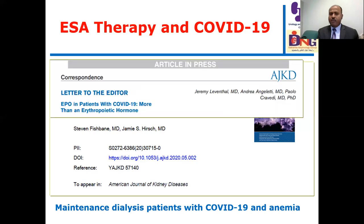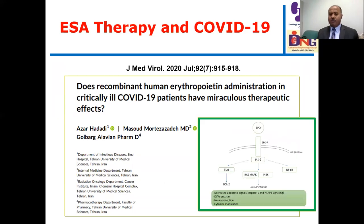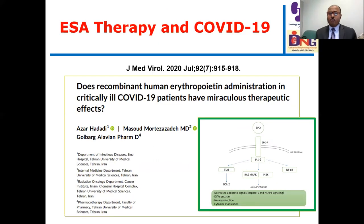However, one letter to the editor addresses some beneficial effects of erythropoietin on inflammatory parameters, because EPO may modulate immunity. In one case—an 80-year-old patient with severe COVID-19—the condition was ameliorated by erythropoietin use, as EPO may be associated with reduction of NF-κB, reduction of apoptosis, neural protection, and cytokine modulation. In this case, EPO use was associated with a miraculous therapeutic effect.